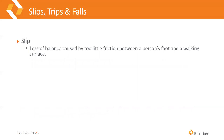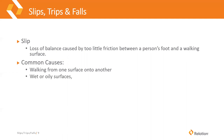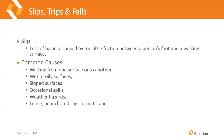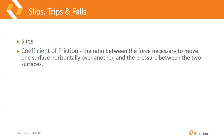A slip is a loss of balance caused by too little friction between a person's foot and a walking surface. Common causes include walking from one surface onto another, wet or oily surfaces, sloped surfaces, occasional spills, weather hazards, loose unanchored rugs or mats, flooring that is worn, and improper footwear. Related to slips is the coefficient of friction — the ratio between the force necessary to move one surface horizontally over another and the pressure between the two surfaces.